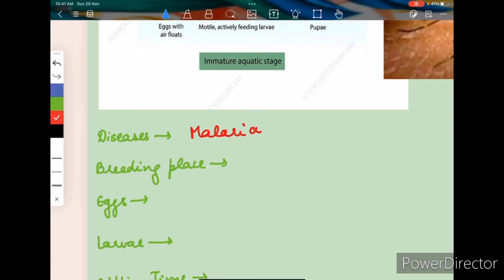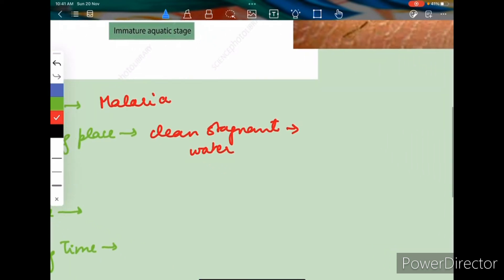The breeding place is clean stagnant water. So in clean stagnant water which gets collected, this mosquito breeds. Now what can be the clean stagnant water? It can be roadside water.